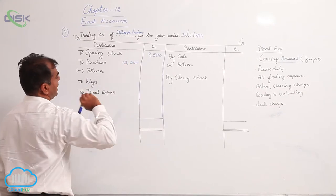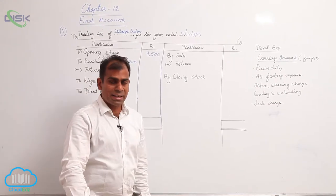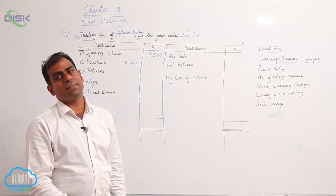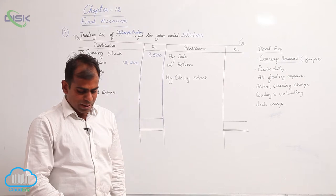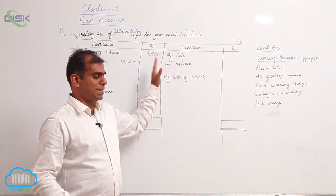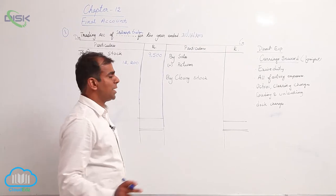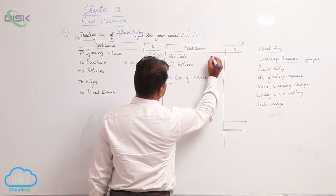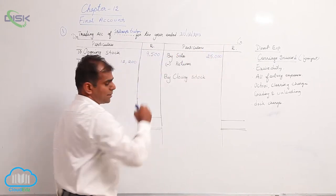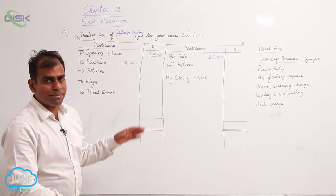Now the next item is sales. When sales is given also check if sales returns is given or not. We do have sales returns of 500, so I am going to write my sales value which is 25,000 against sales in a column.